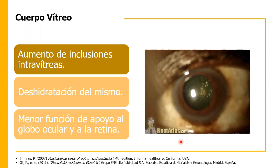Al irse contrayendo el vítreo se va perdiendo la función de apoyo. Es muy común que los pacientes digan que ven como una mosquita, una miodesopsia. Me pasó porque llevé a una tía que tenía esto y pensé que traía un desprendimiento de retina, pero la doctora dijo que era precisamente un cambio asociado a la edad.